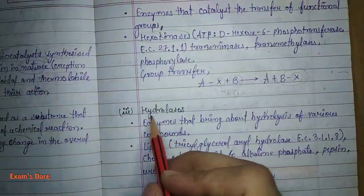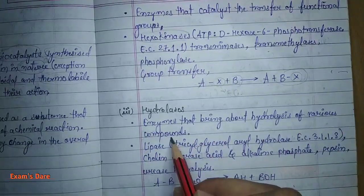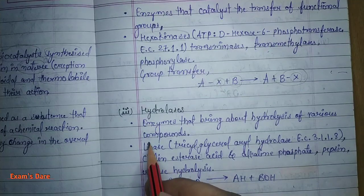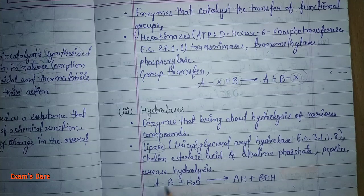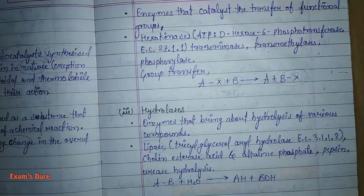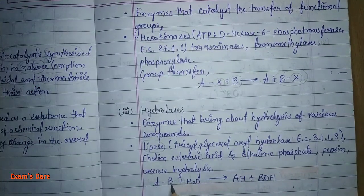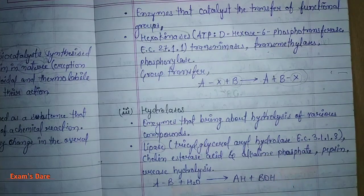Third are Hydrolase Enzymes — enzymes that bring about hydrolysis of various compounds. The most common example is lipase. In the reaction, A and B react in the presence of water. Water breaks down into H⁺ and OH⁻. H⁺ attaches with A and OH⁻ attaches with B. We call this hydrolysis — 'hydro' means water and 'lysis' means breakdown. The enzymes we use for hydrolysis reactions are called hydrolase enzymes.